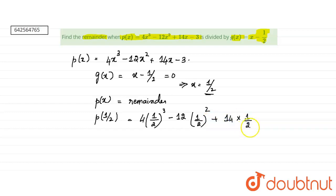1 by 2 whole cube is 1 by 8 minus 12 into 1 by 2 whole square is 1 by 4, then we have plus 14 into 1 by 4.